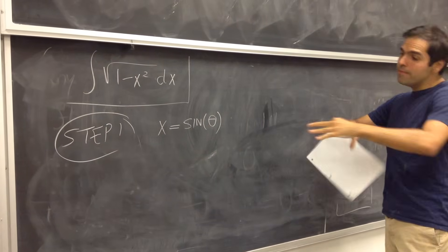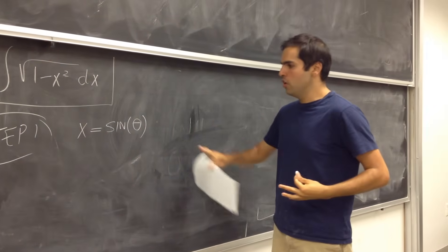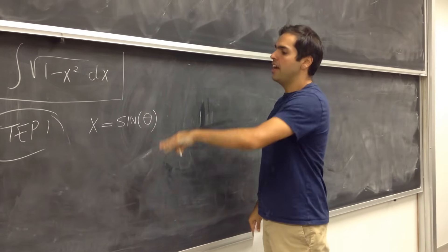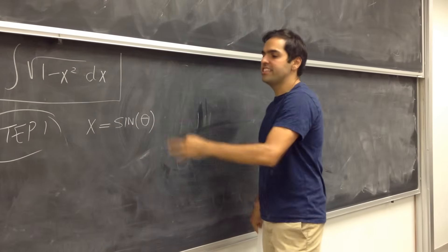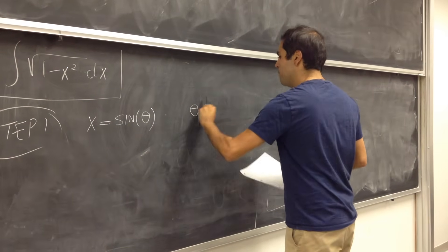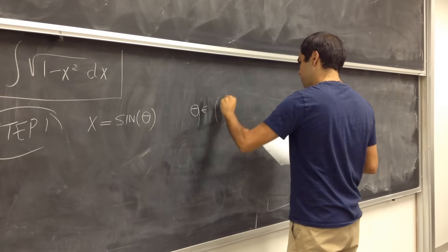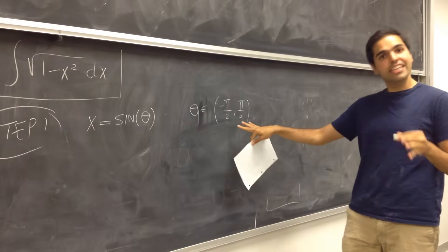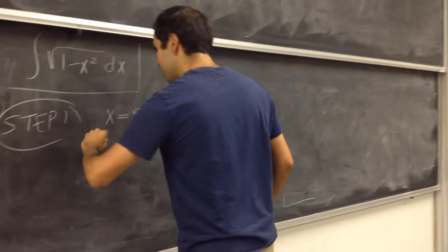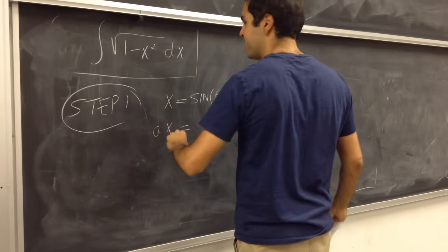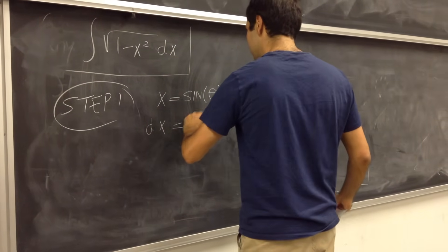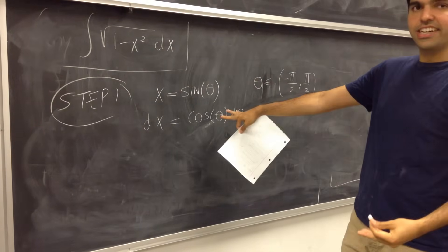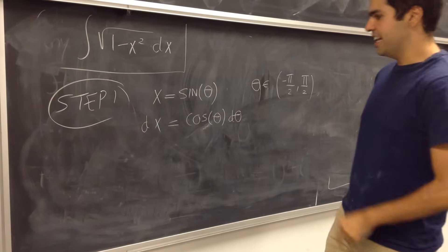I'd like to remind you that the only way this works is if sine is one-to-one, and in this case theta is on the interval minus pi over 2 to pi over 2. This is a little technicality that will become useful in a second. The next step is to calculate dx, which is cosine of theta d theta — you differentiate sine, you get cosine, and you add a d theta.